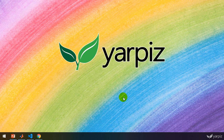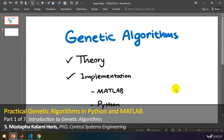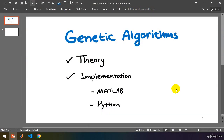Hi everybody! This is Mustafa Kalami from Yarpus and in this video tutorial we're going to learn about genetic algorithms. Firstly we will have a brief introduction to the theory of genetic algorithm and then we will implement a simple version of GA using MATLAB and Python.